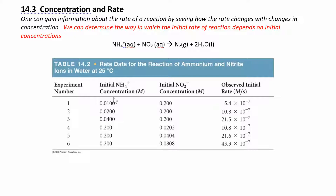So concentration versus rate. Here we have a chart of different experiments — it's the same reaction. We're looking at changing one concentration of one reactant at a time and then measuring the rate. From experiment one to two, we doubled the concentration of one reactant and kept the other constant, and the rate doubled. Then we doubled it again, kept the other constant, and the rate doubled again. Down here, now we're holding those constant, doubling this concentration, and the rate doubles.